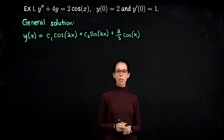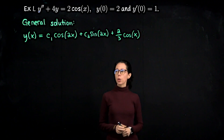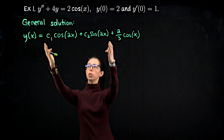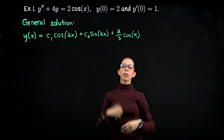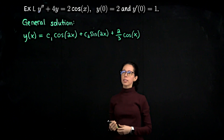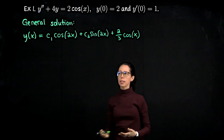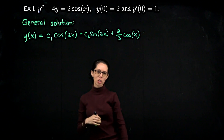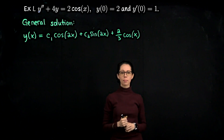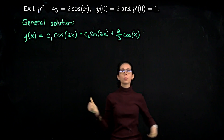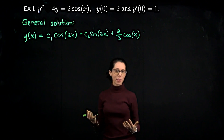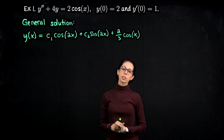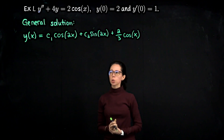Here's the general solution we just worked out. The method of undetermined coefficients gives us the sum of the homogeneous solution and the particular solution. The only unspecified constants live in the homogeneous solution — we've determined the coefficient for the particular solution. Now let's look at this initial value problem. To solve for the initial conditions, we just proceed in the usual way.